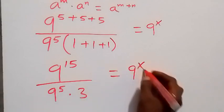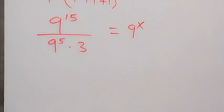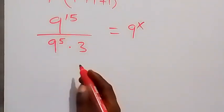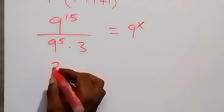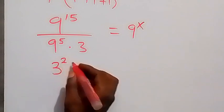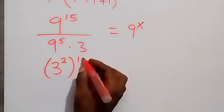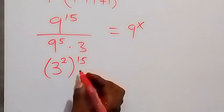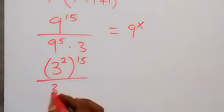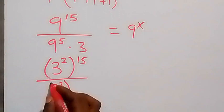We can also change 9 to base 3. So 9 is 3 squared, and this will be 3 squared raised to power 15, then divided by 3 squared raised to power 5.